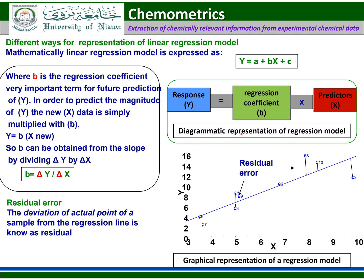Diagrammatically, the linear regression model shows the response — the dependent variable — equal to the regression coefficient multiplied by the predictors or independent variables. Graphically, here you see the x variable and the y variable, the regression line, and the data points for each sample. The difference between the sample data point and the regression line is called deviation, also known as residual error.